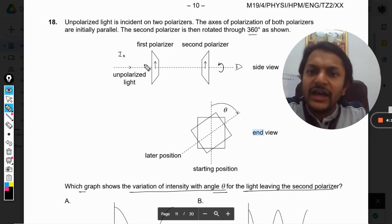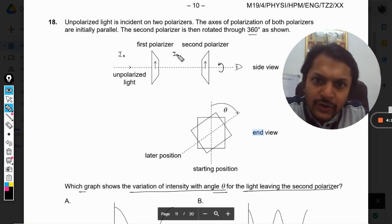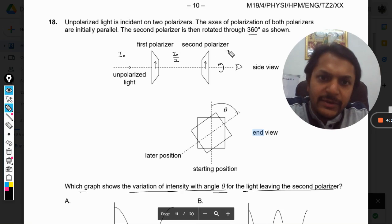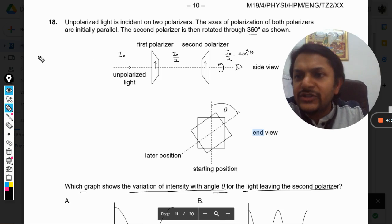What happens here is if the intensity here is I naught, this becomes I naught by 2, and the intensity that we are getting here will be I naught divided by 2 into cos square theta. This is known as Malus's Law.